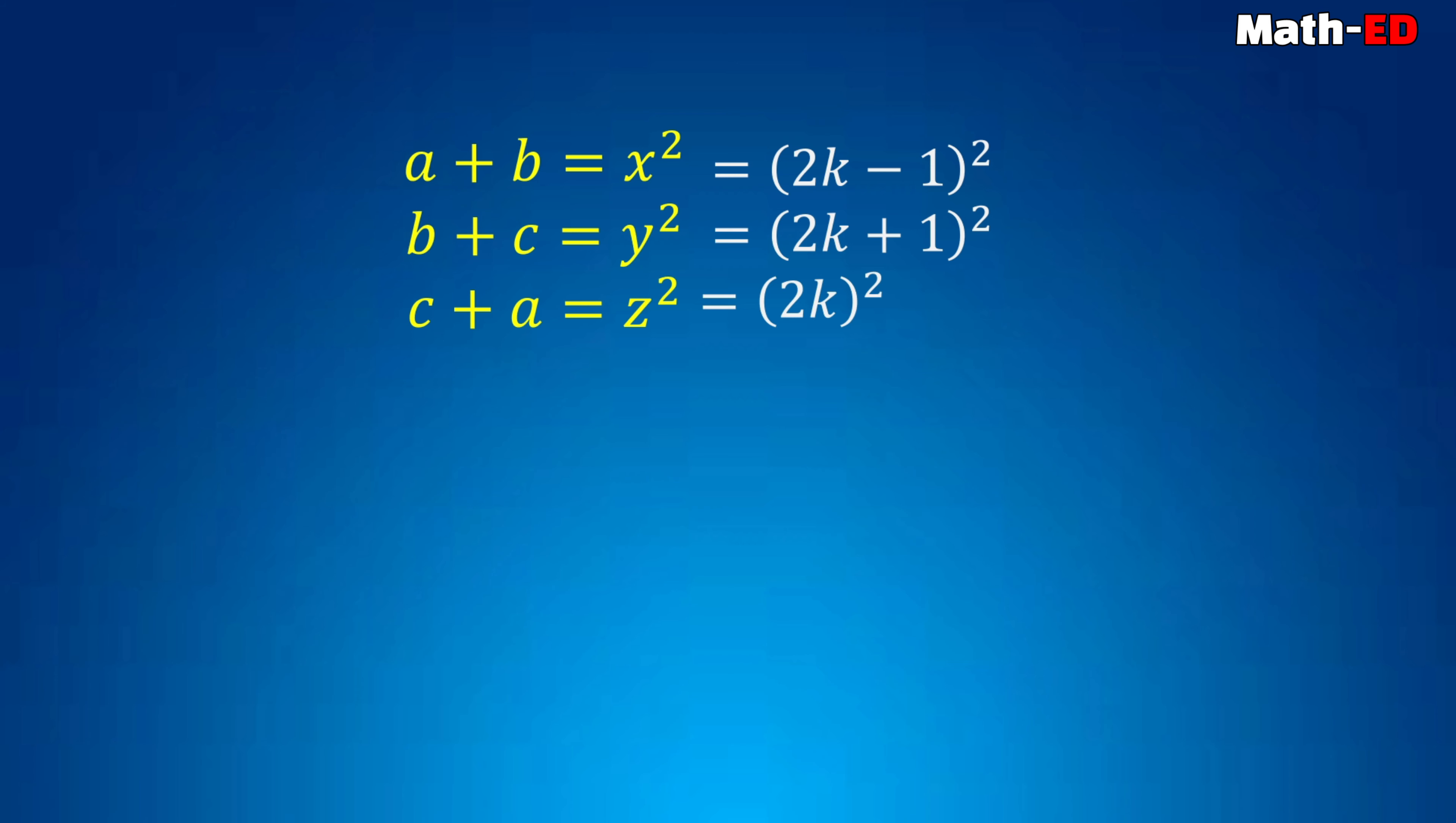Now, if we add them up, we must get 2 times a plus b plus c, that equals 12k squared plus 2. From here we must get a plus b plus c equals 6k squared plus 1.